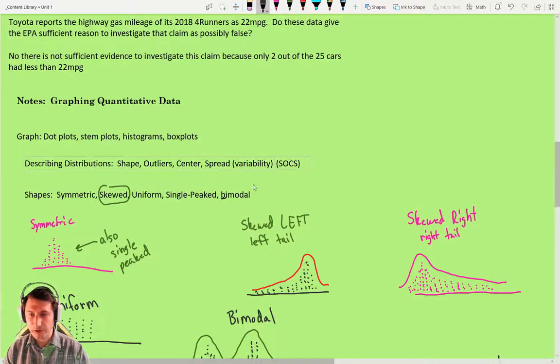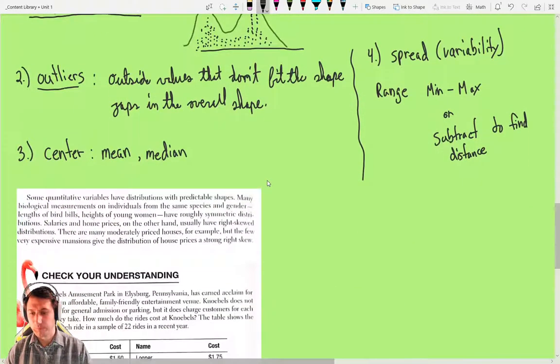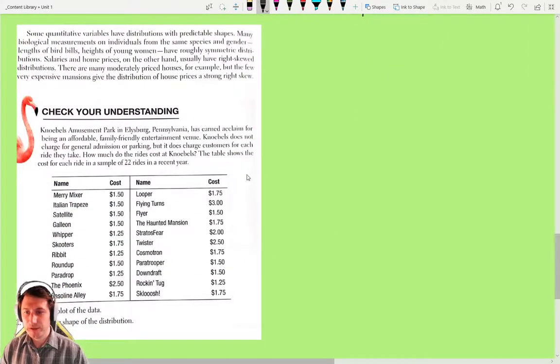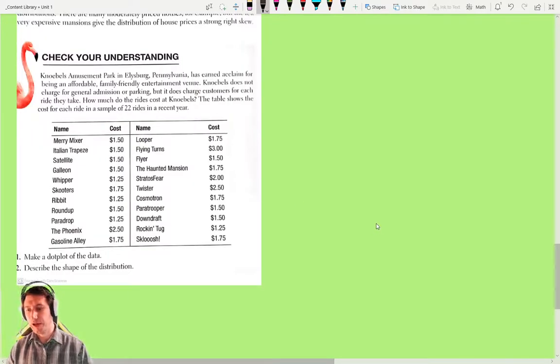Again, we've got the acronym SOCS, Shape, Outlier, Center, Spread. What I'd like you to do now is pause the video to try one out for yourself. Read the problem here. It's asking you to make a dot plot and then describe the shape of the distribution. If you could describe all four parts of the SOCS, I'd appreciate that. It's good practice. So pause the video. Try that out.